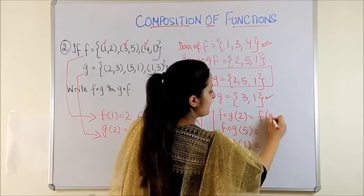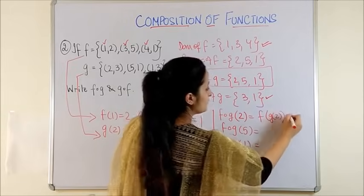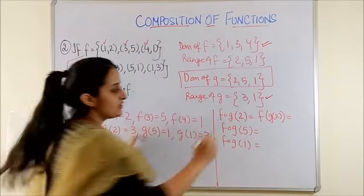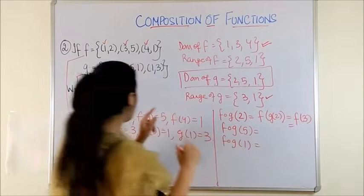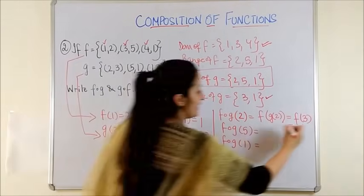Which means F applied to G of 2. G of 2 from here is 3. So it is the same as saying F applied to 3. Now, F applied to 3 gives us the answer 5.